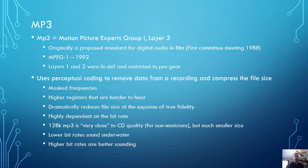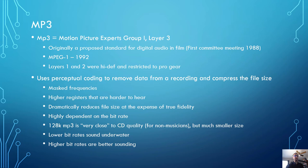The MP3 dramatically reduces file size, but at the expense of true analog fidelity — it is highly dependent on the bitrate. Supposedly, for non-musicians, a 128 kilobyte per second MP3 is close to CD quality but much smaller. Every musician will instantly pick it out as inferior. Lower bitrates tend to sound a little underwater due to the compressed frequency spectrum, so higher bitrates are preferred. Generally, if I'm purchasing music online from Bandcamp and can't get it in uncompressed WAV format, I'll try for a FLAC file, and if not available, go for a 320 KBPS MP3.